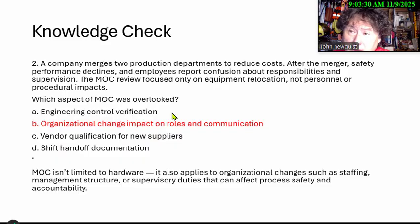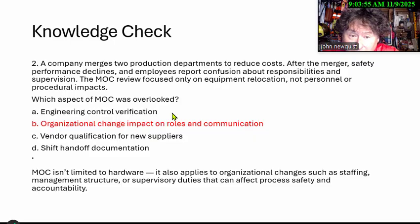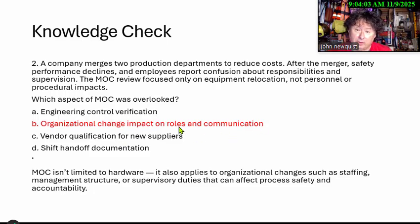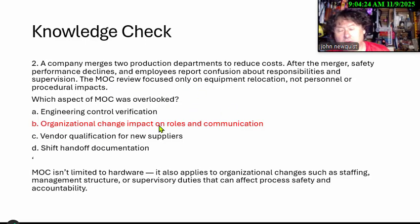Real-world example: I was brought into a large poultry plant where injuries had tripled from January to May. The new operations manager decided everyone would do every part of the job in the department. One hard task was taking 30-pound packs of chickens from the conveyor to a pallet on the ground. People who had only been cutting chickens or putting on labels — including 50- and 60-year-olds — were now doing heavy lifting for eight hours a day. Of course injuries spiked. If they had done a change management review and talked to employees, this would have surfaced immediately.